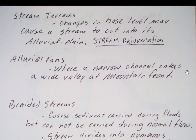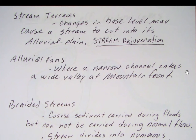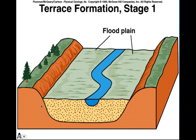Other things that occur in streams are stream terraces. The stream may establish for a while, and then tectonic uplift can change the base level, causing the stream to start cutting into its own alluvial plane — the floodplain — and abandon its old alluvial plane as it cuts down into a new one. We usually call that stream rejuvenation and the formation of a terraced stage one.